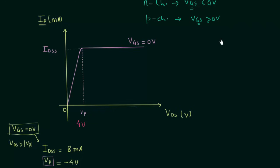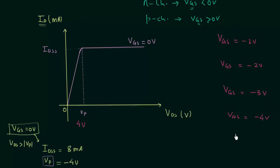Now we consider additional cases. In case 2, VGS equals minus 1V. In case 3, VGS equals minus 2V. In case 4, VGS equals minus 3V. And in the last case, VGS equals minus 4V. At this point, here is a homework problem: we are making VGS more and more negative — why are we not making VGS positive? You have to tell me the effect when we make VGS more positive for N-channel JFET. Once you have your answer, post it in the comment section.